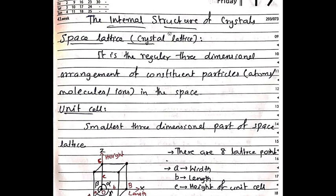This is the internal structure of crystals. Let us see what is space lattice or crystal lattice. This is the regular three-dimensional arrangement of constituent particles. The constituent particles may be atoms, molecules, or ions in space. This regular three-dimensional arrangement in a material substance is called the crystal lattice.